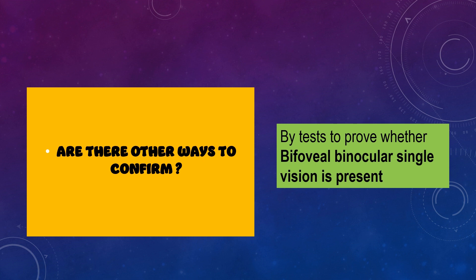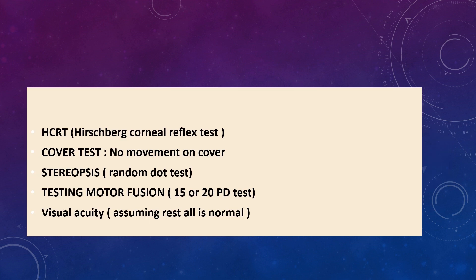Are there specific tests to confirm whether we are dealing with pseudo-strabismus or true strabismus? Yes — tests that prove whether bifoveal binocular single vision is present or not. The first test is the Hirschberg's corneal reflex test (HCRT). Next is the cover test — any movement on the cover test indicates squint is present, so in pseudo-strabismus there will be no movement. Stereopsis is also assessed: a person with true strabismus will have deteriorating stereopsis, while a person with pseudo-strabismus will usually have a normal random dot stereopsis test.